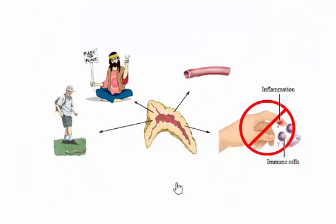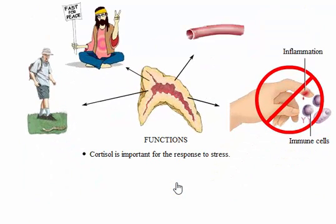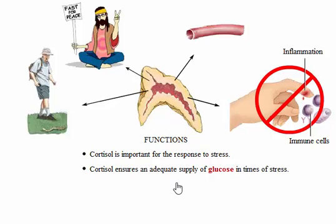Cortisol is important in the body's response to stress. It is key among the many hormones involved in controlling metabolic fuels. It ensures an adequate supply of glucose and fatty acids during times of stress when a person has not eaten.